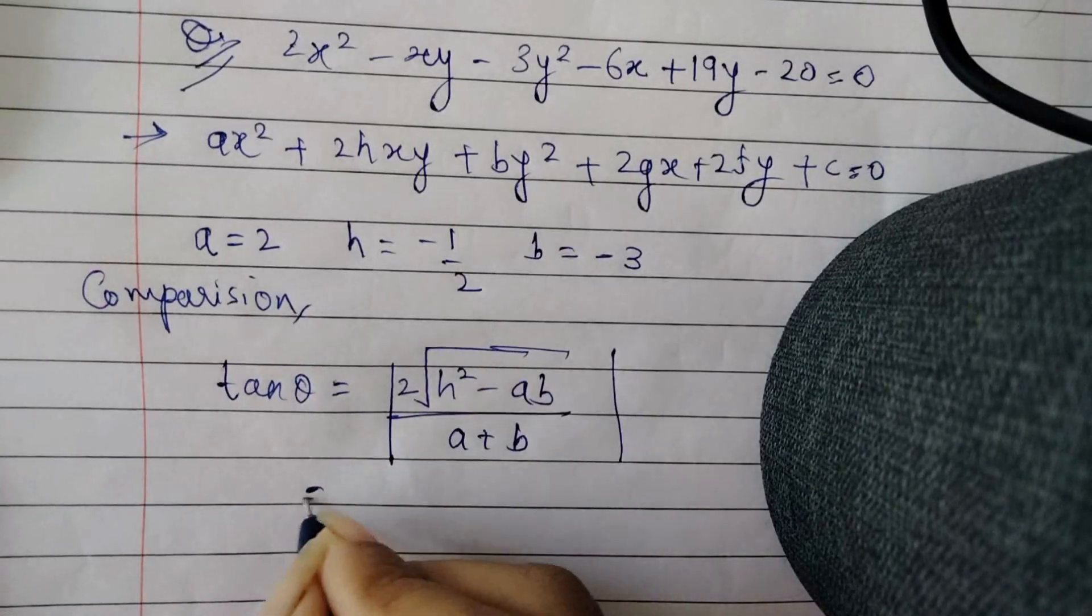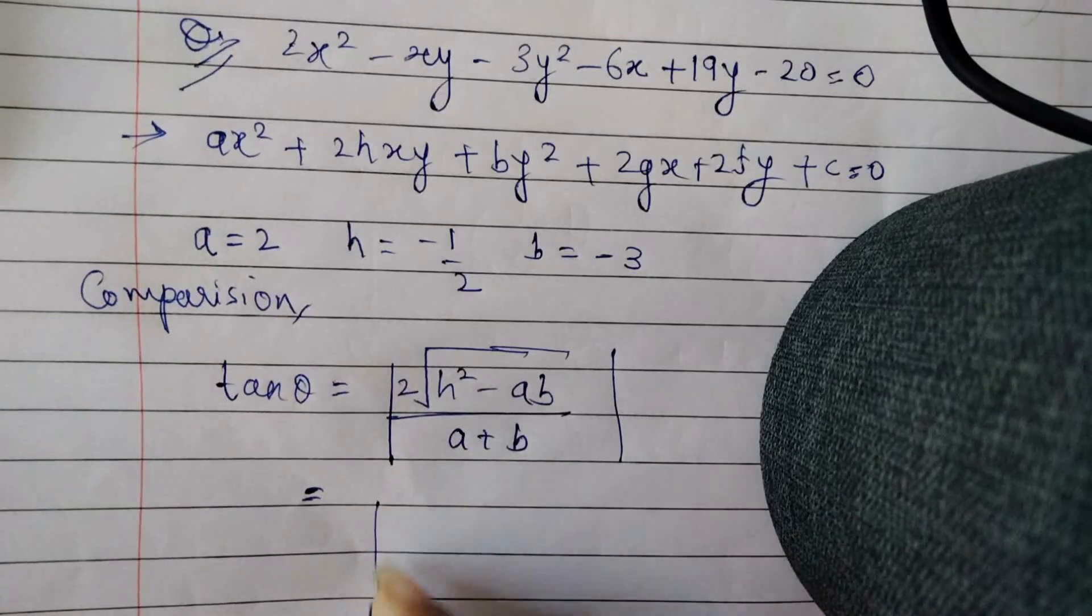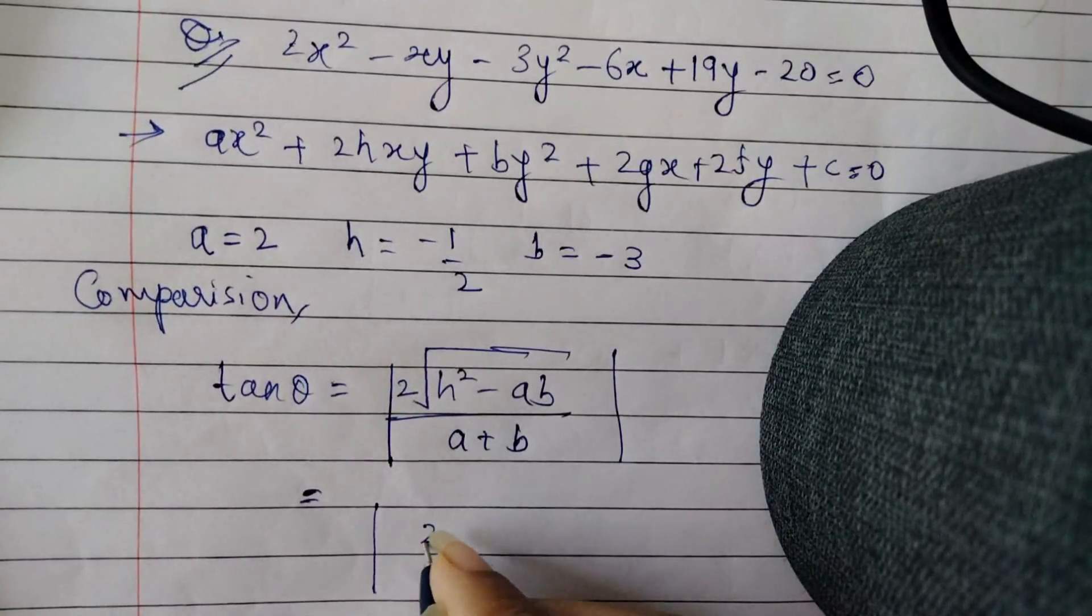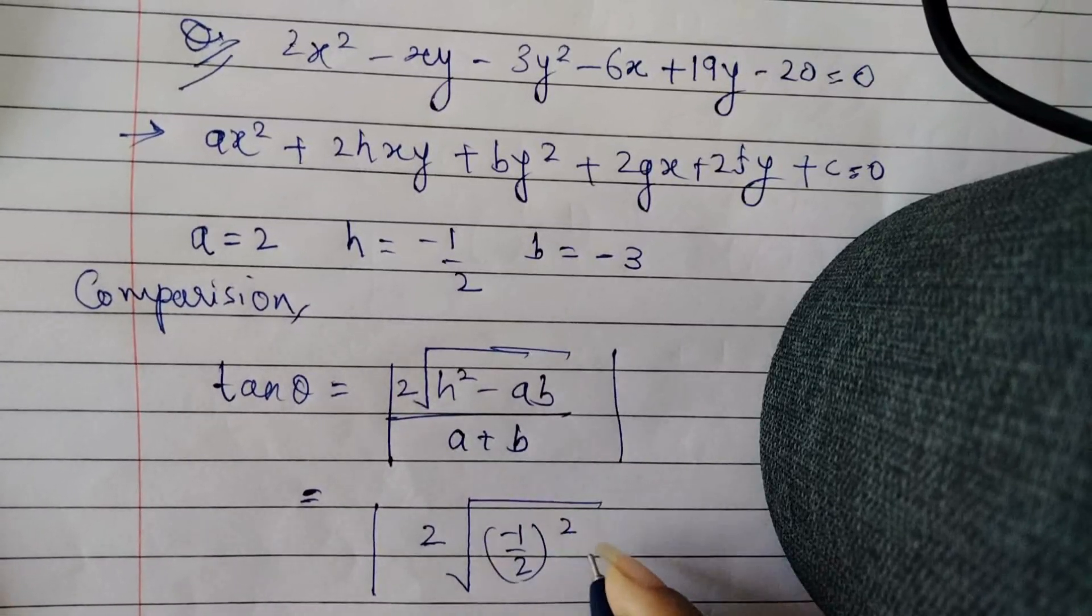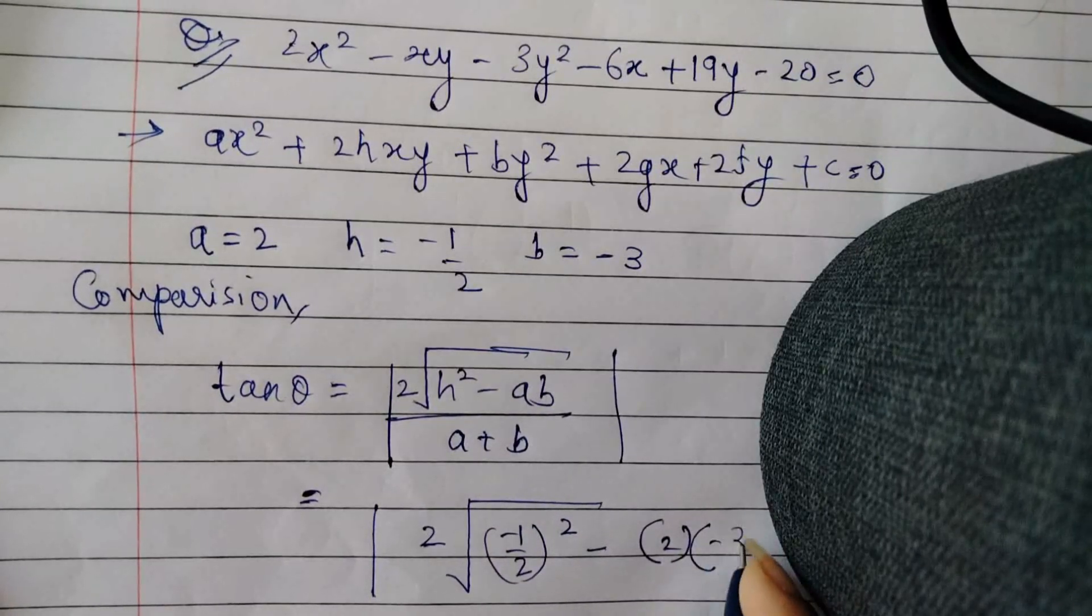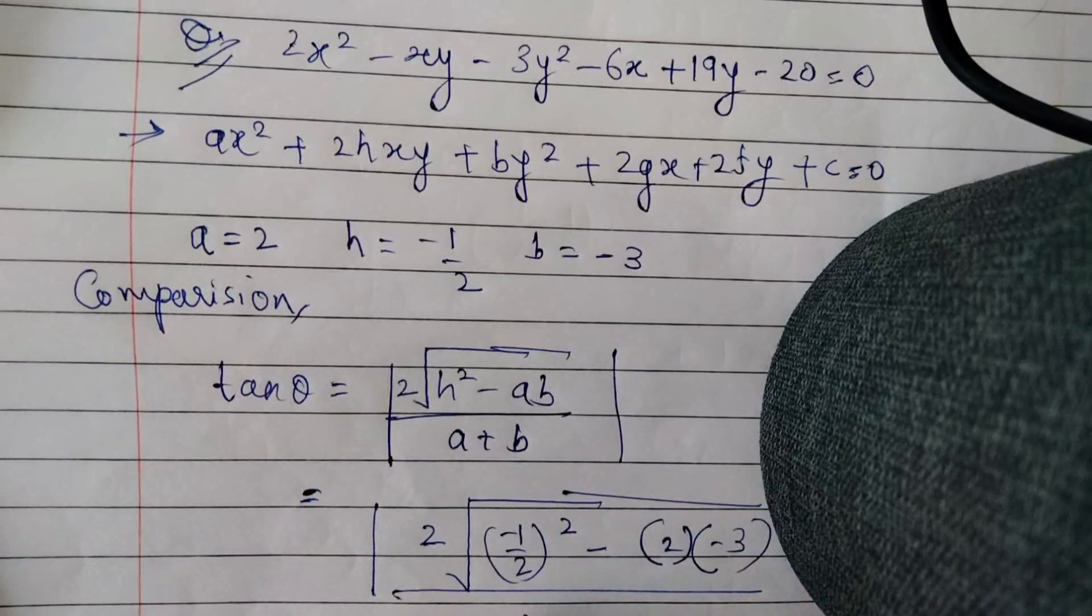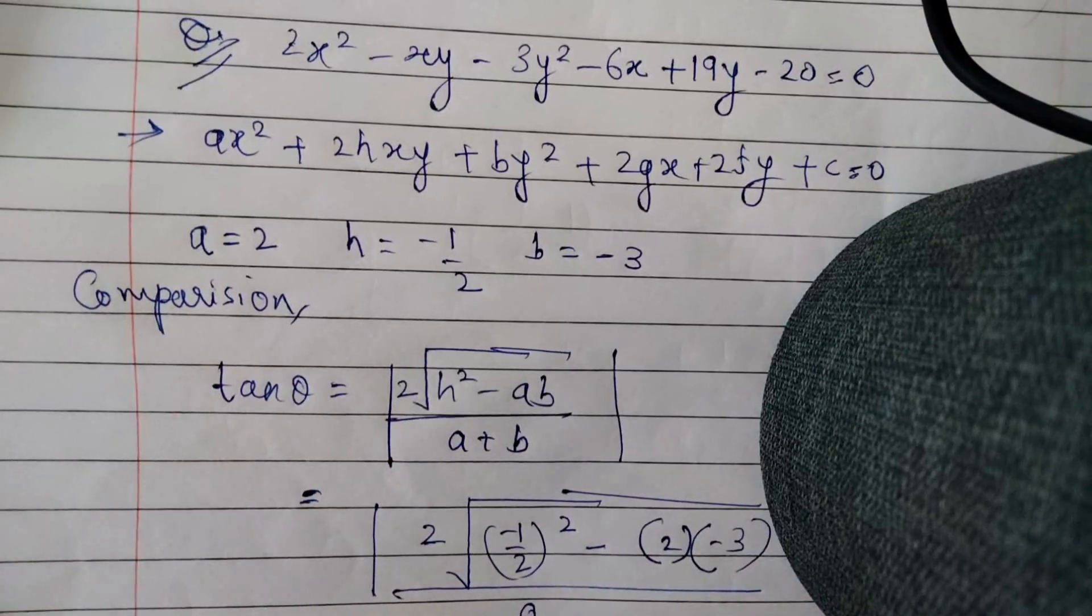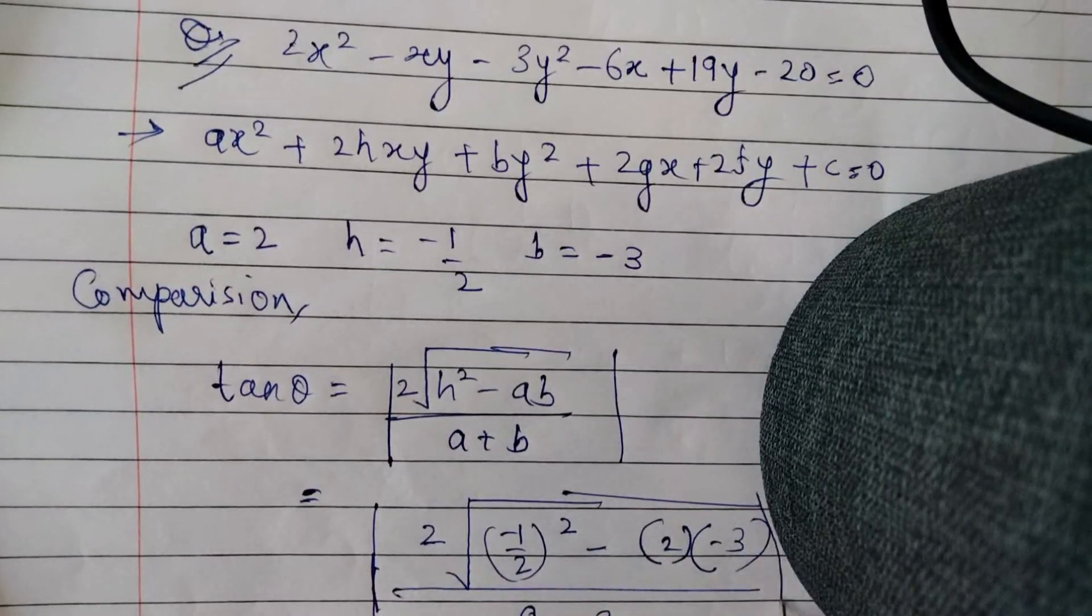So we will use this. Substituting the values of h, a and b will give us |2√((-1/2)² - (2)(-3))/(2 + (-3))|. This will be whole under root divided by 2 - 3 whole in mod.